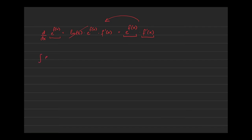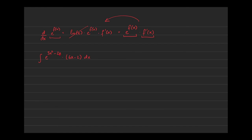Now if I ask you to integrate e to the (3x² minus 2x) times (6x minus 2) dx — if you know your derivative rules, you recognize that the derivative of the exponent 3x² minus 2x gives 6x minus 2, which is exactly what appears here. So differentiating e to the f(x) would give e to the f(x) times f'(x), and that's precisely what we have.